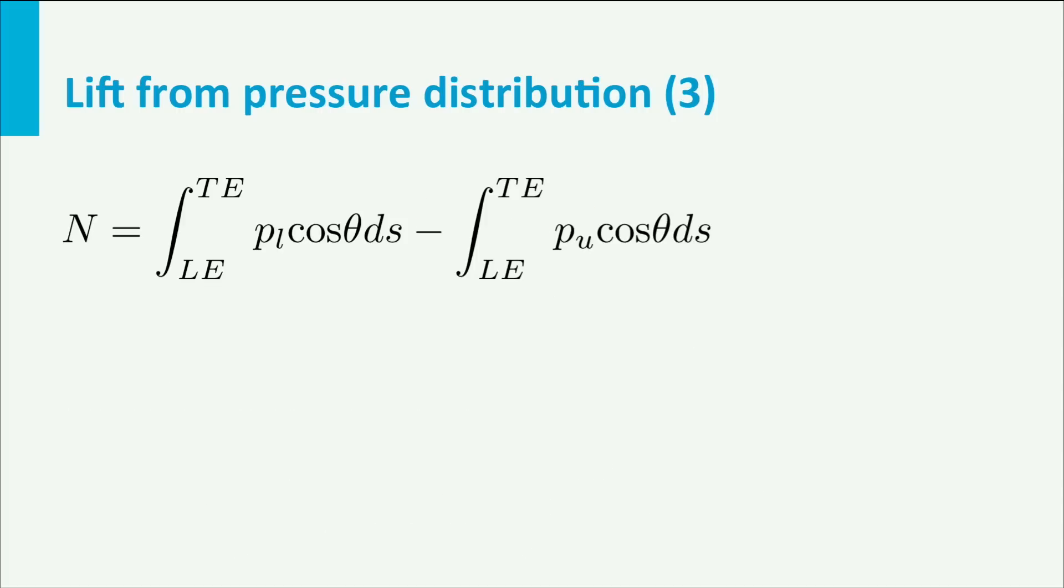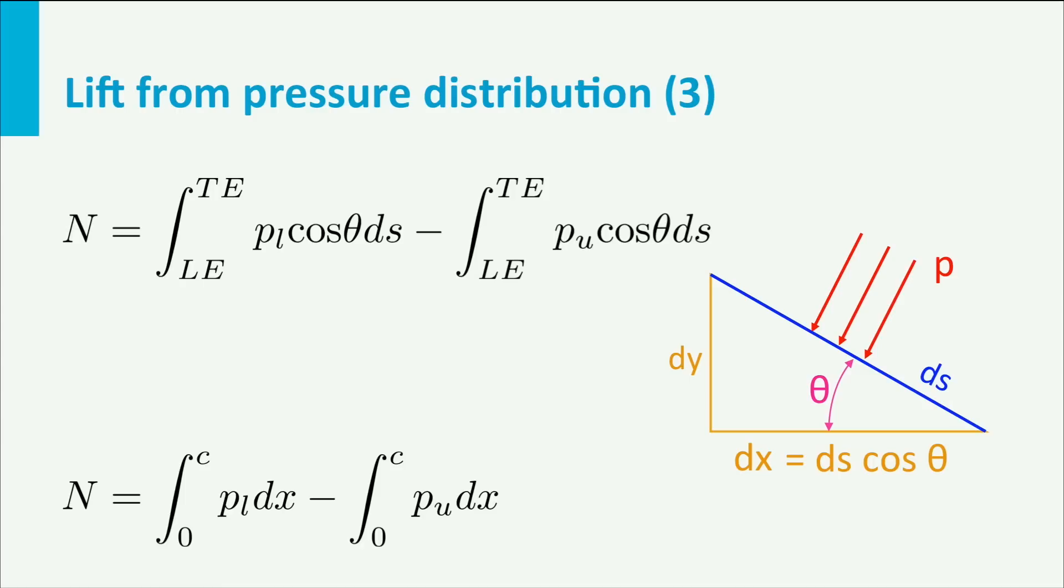Now let us concentrate a bit on this cosine theta times ds. If we look at the element ds, we see that in fact ds cosine theta is dx. Now we can transform the integral in an integration along the x-axis, so from 0 to c of p l dx minus p u dx.